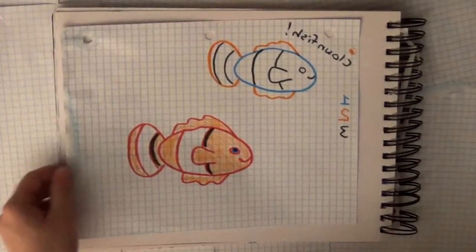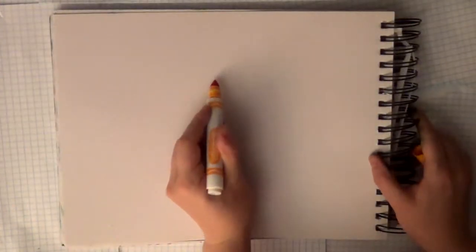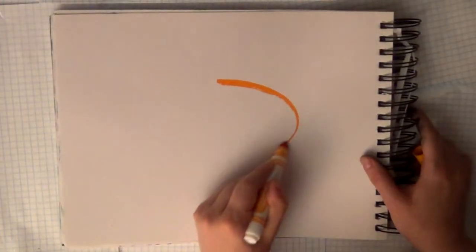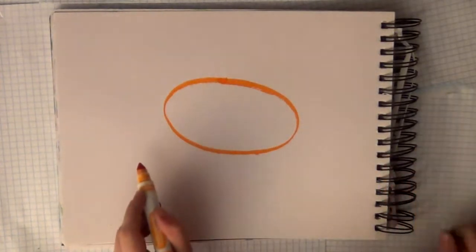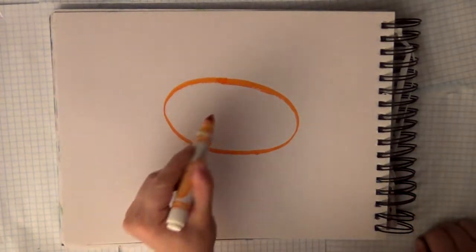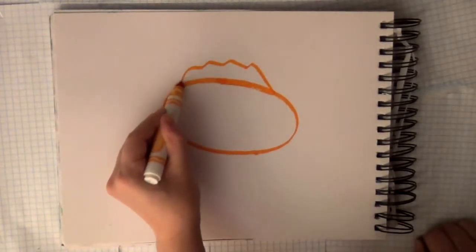Finally, you're going to draw a clownfish. Number one: draw an oval shape. Step number two: make some wavy fins on the top and the bottom of the oval.